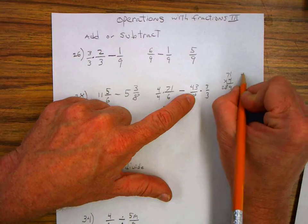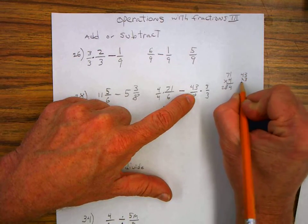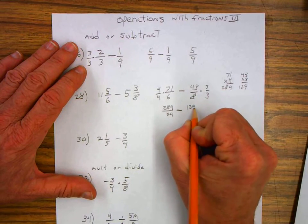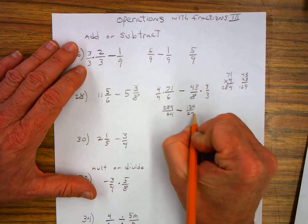And forty-three times three. Three times three is nine. Three times four is twelve. A hundred and twenty-nine all over twenty-four.